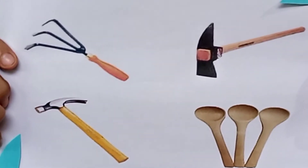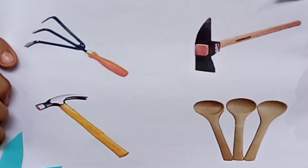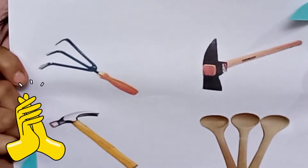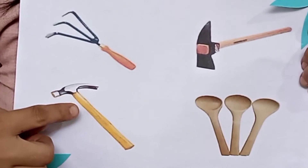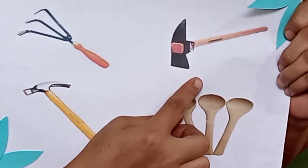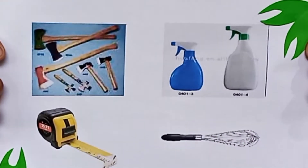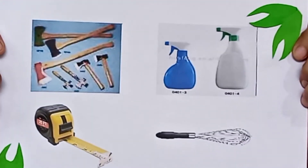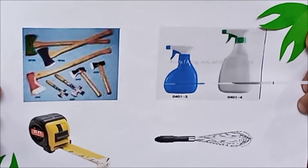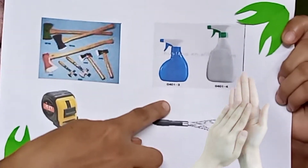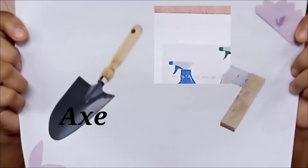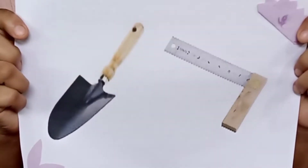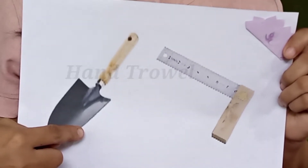Now let us do our first activity. Look at those pictures. Which among those pictures are used in farming? You are correct. This picture is a farm tool, and this picture is a farm tool. This one is a pig matok, and this one is a hand cultivator. The name of the next pictures — this one is a sprayer and the other one is an axe. This one is a farm tool and it is a hand trowel.